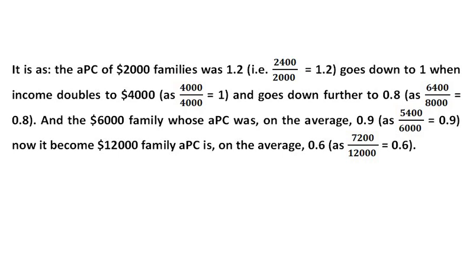It is as the APC of $2,000 family was 1.2, goes down to 1 when income doubled to $4,000, and goes down further to 0.8. And the $6,000 family whose APC was on average 0.9, now it becomes $12,000 family whose APC is on average 0.6.